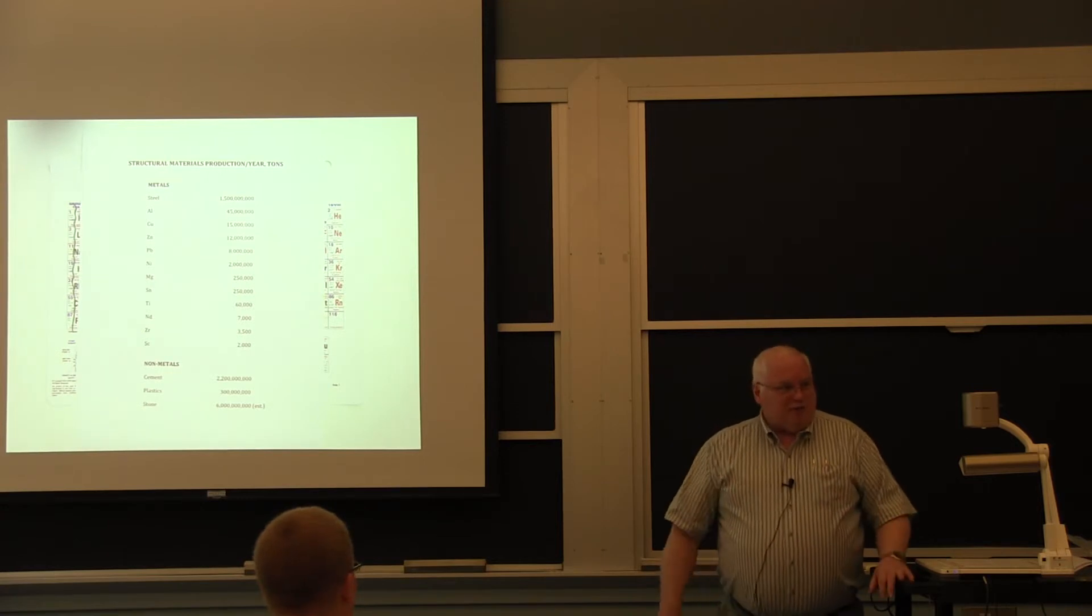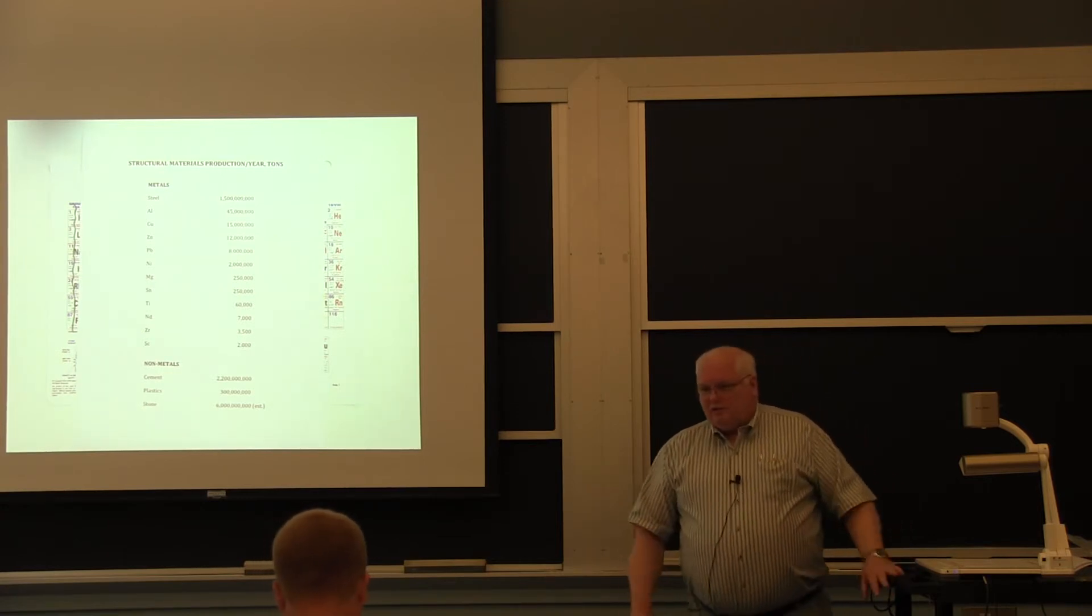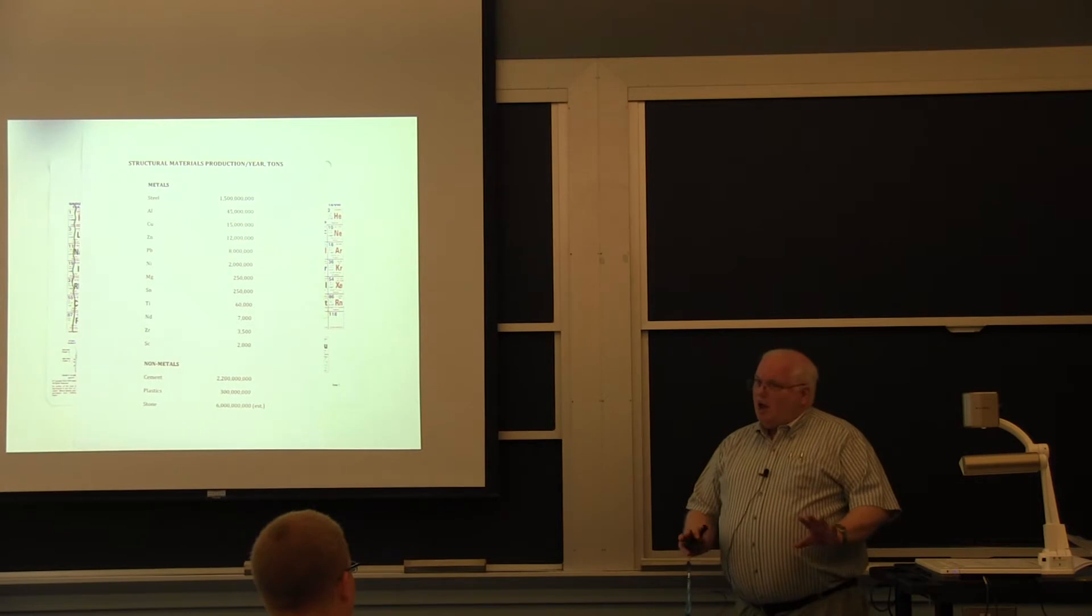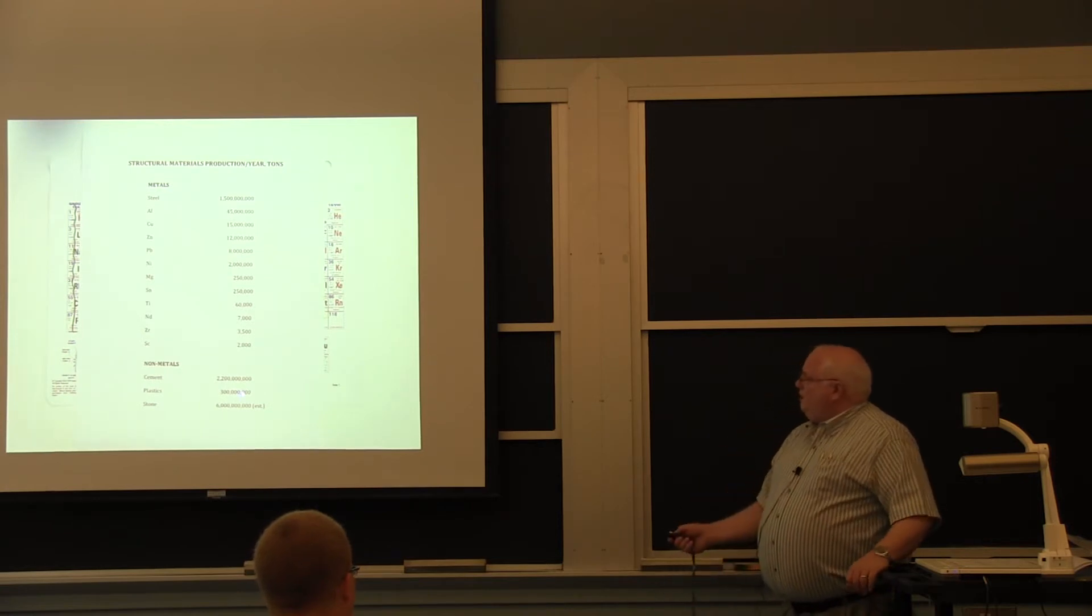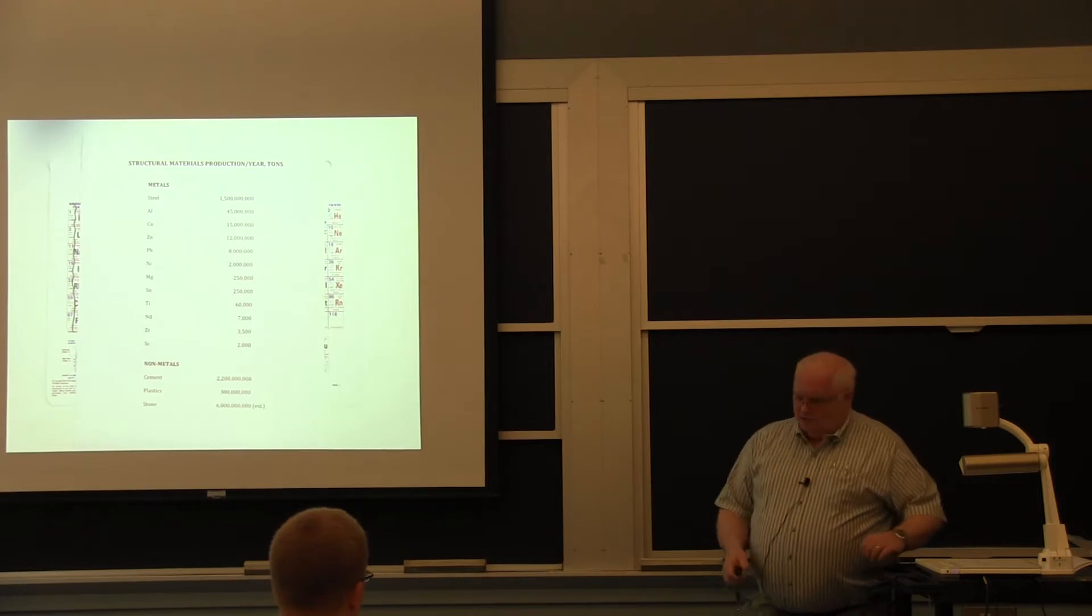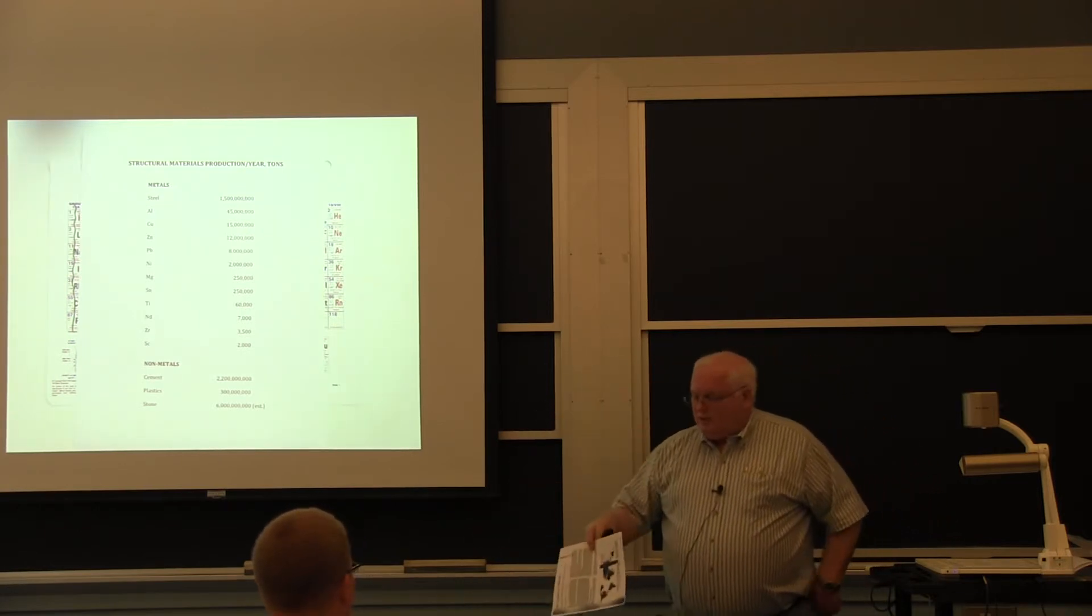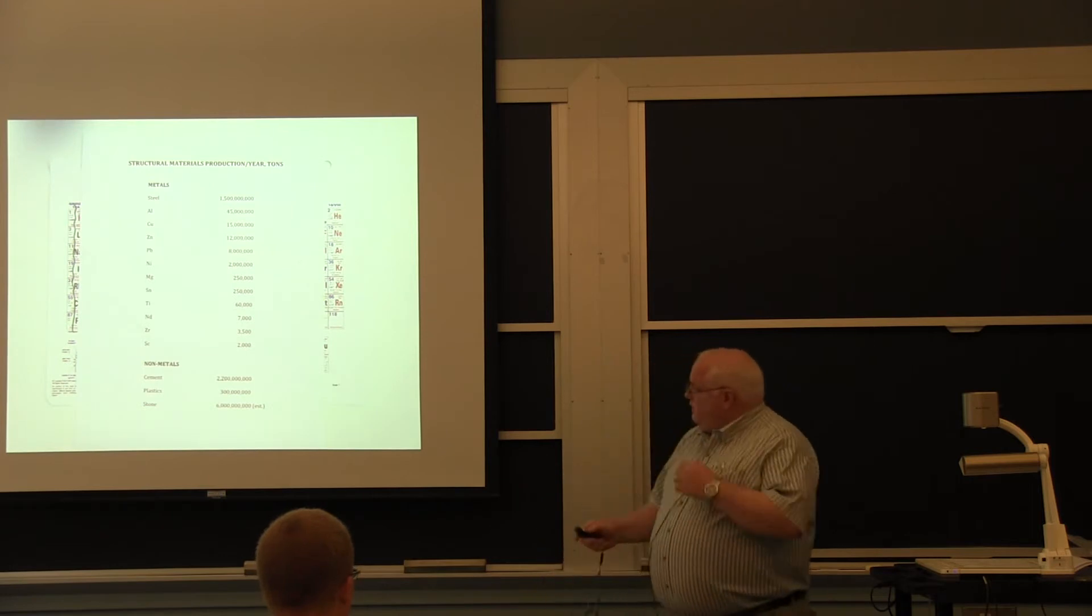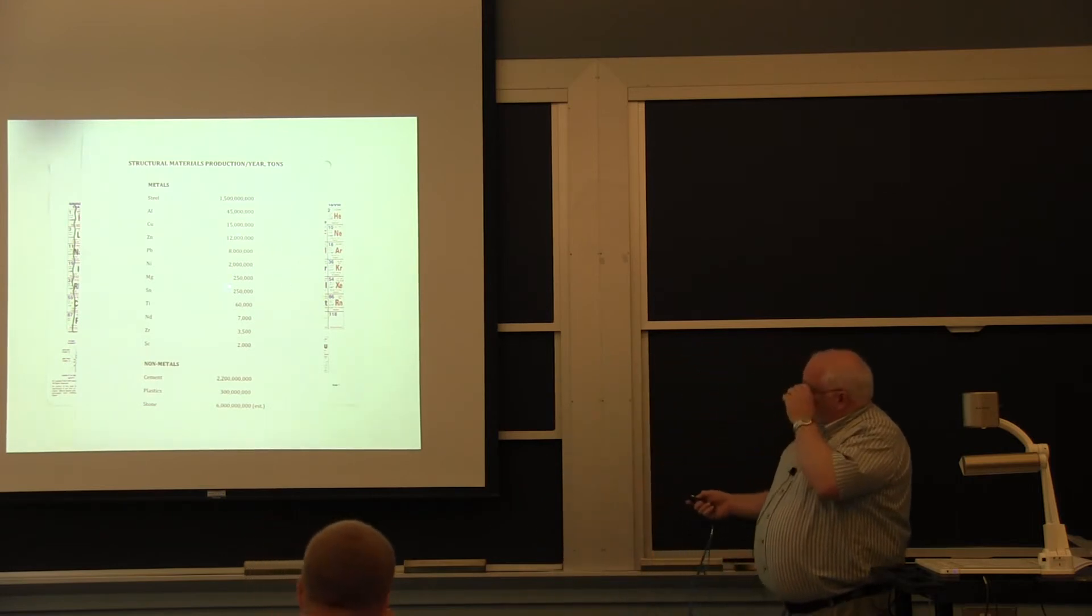Obviously they weren't producing that much cement before. Obviously, if you go to China, they're building lots of cement buildings and roads and dams and everything else. Aluminum is 45 million tons, copper is 15 million tons. If you went back to this graph that I gave you at the beginning of the semester, and hopefully some of this puts things into perspective.